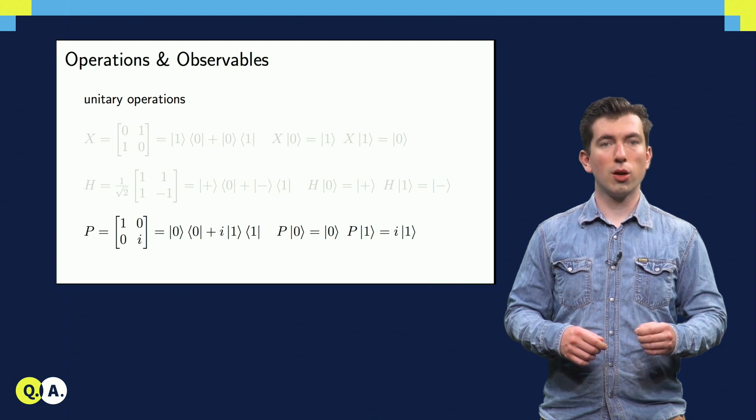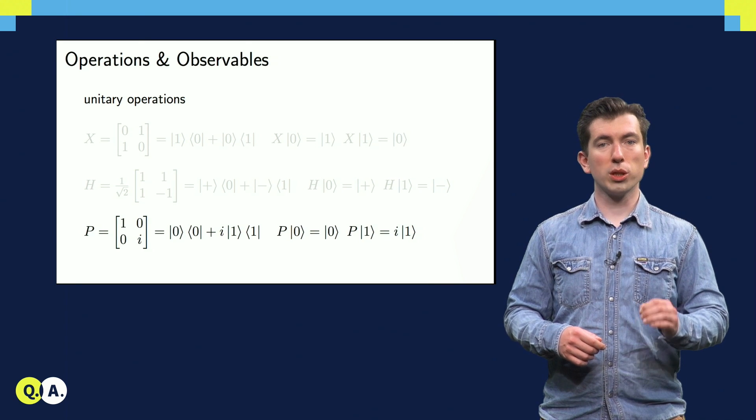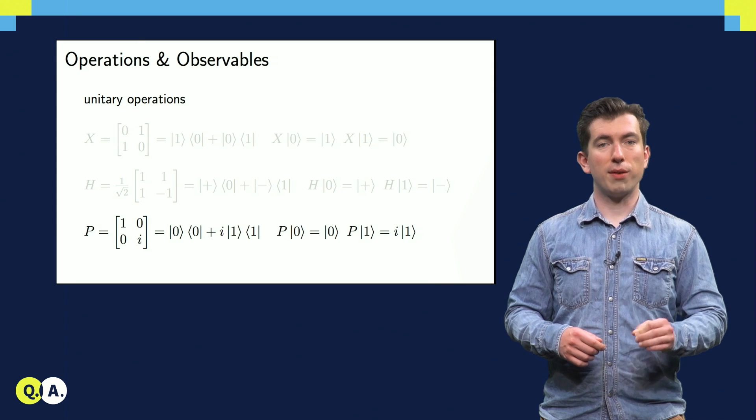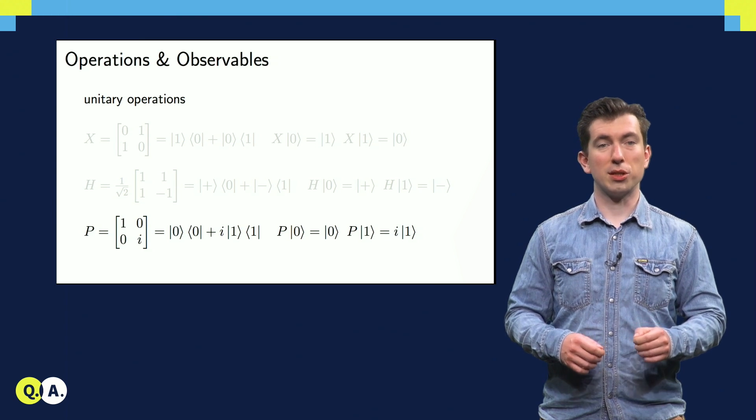There's another gate, called the phase gate, which only multiplies the 1 state by a factor of i, changing the basis in a very subtle way.